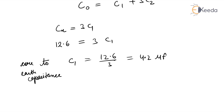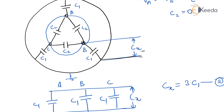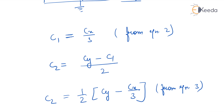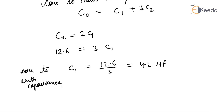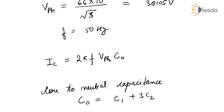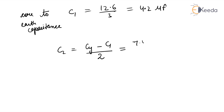Now we find C2. Using the equation: C2 equals (CY minus C1) divided by 2. CY is given as 7.4 microfarad, so C2 equals (7.4 minus 4.2) divided by 2, which equals 1.6 microfarad.